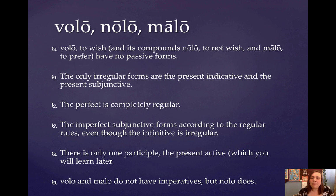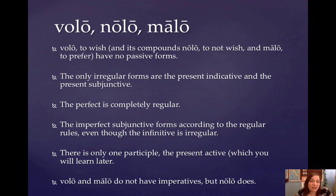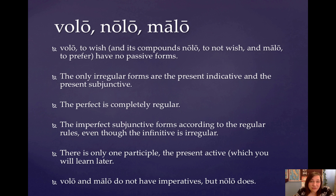Volo and its compounds nolo and malo do not have passive forms. You will only learn active forms for these three verbs. The only irregular forms that they really have are the present indicative and the present subjunctive. The perfect is completely regular, as it is with all verbs, and there's no perfect passive, obviously, because there are no passive forms. But everything else is actually going to form the way that you essentially expect.